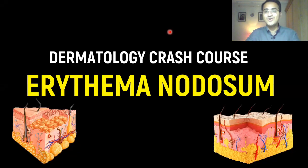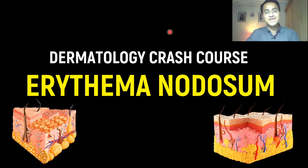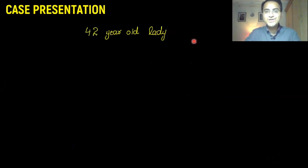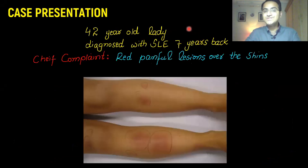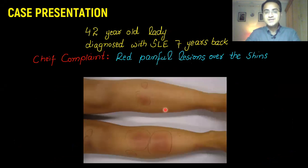In this dermatology crash course video, we'll be talking about erythema nodosum. We have a case: a 42-year-old lady diagnosed with SLE 7 years back, presenting with red painful lesions over the shins. This is a picture of those lesions over the shins.